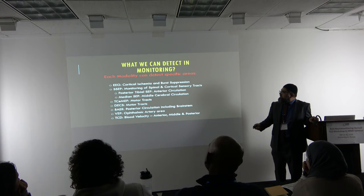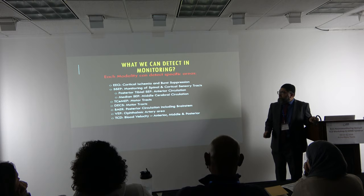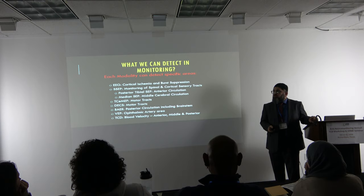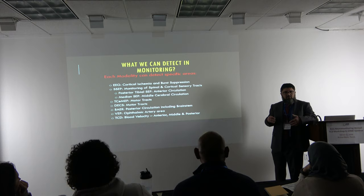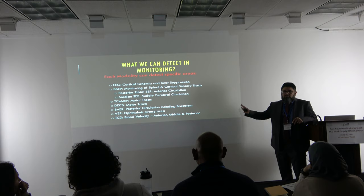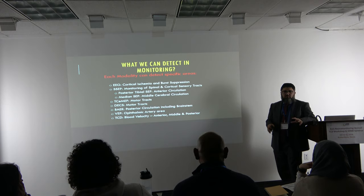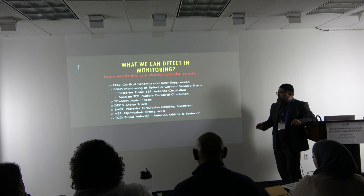EEG detects cortical ischemia and monitors burst suppression. SSEP covers all sensory pathways and indirectly monitors motor function because one-third of motor fibers originate from the post-central gyrus. Posterior tibial SSEP is for anterior circulation; median nerve SSEP for upper limb. We do ulnar for positioning. For craniotomy, median nerve SSEP is key because it covers a larger cortical area. TCMEP monitors the motor tract; direct cortical stimulation is also very useful.